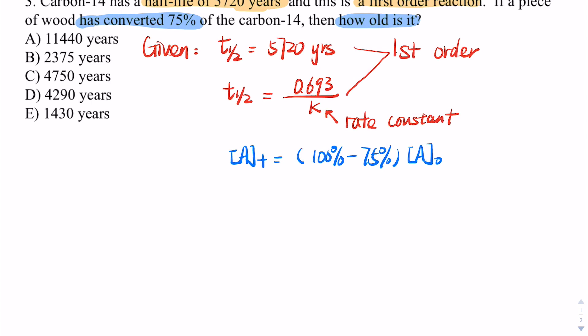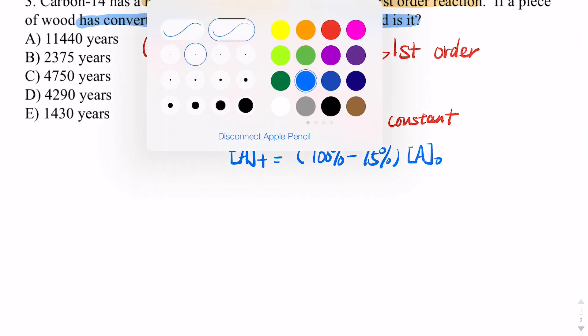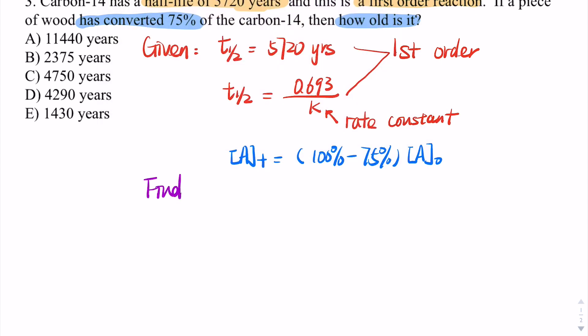So I know the concentration at this moment, and I'm looking for how old it is — that's the time t. I can calculate the rate constant k, and then I have k, concentration, and time. The integrated rate law can help me solve this. Since this is a first order reaction, I'll use that equation.